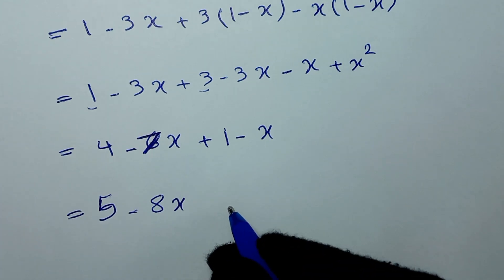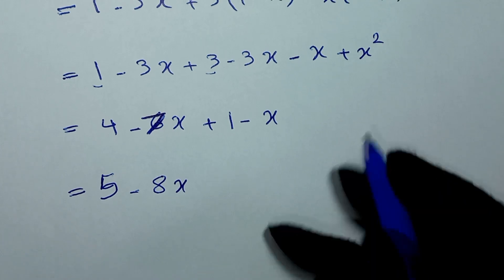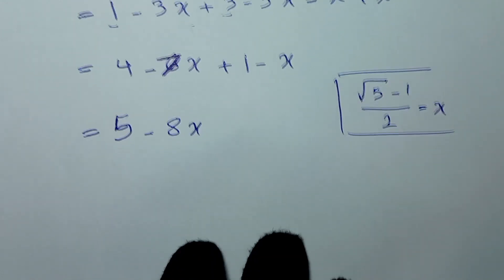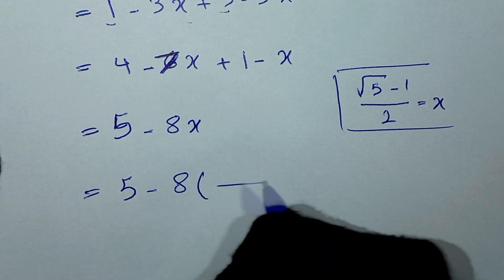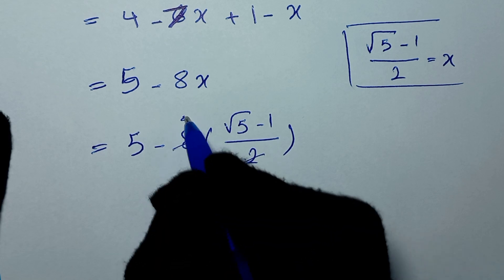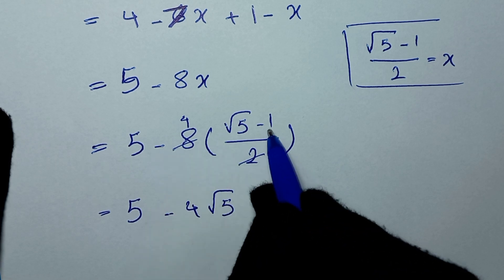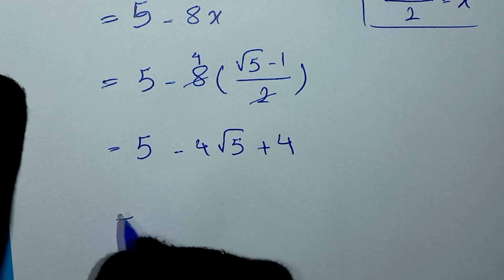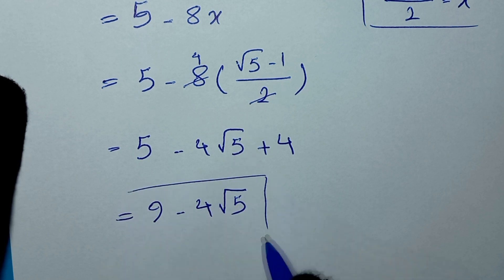Recalling that x equals (√5 minus 1)/2, we substitute back. The expression becomes 5 minus 8 times (√5 minus 1)/2, which simplifies: the 2 cancels giving 5 minus 4 times (√5 minus 1), which equals 5 minus 4√5 plus 4. So our final answer is 9 minus 4 times square root of 5.